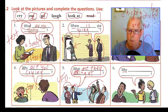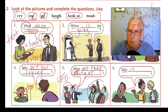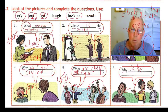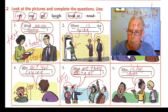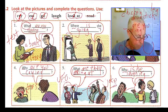And the last one: she is pointing at this guy, so: Why is he laughing? And we use 'is' and 'he.' Why is he laughing? Well because somebody told a funny joke.